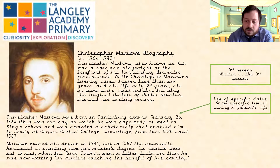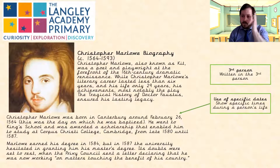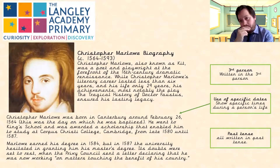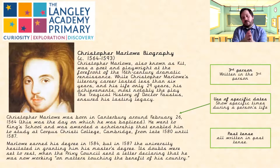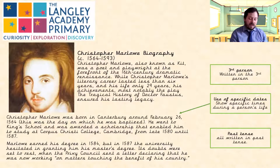We have the use of specific dates, and this helps us think about the chronology of a person's life — when certain things happened and particular important points. The biography is also written in past tense. This is obviously because events happened in the past, but even where the subject is still alive, a biography is still written in past tense because it's about the things they've done in their life.